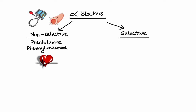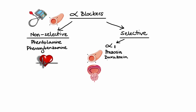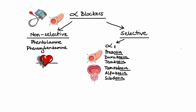Now let's move on to selective alpha blockers — specifically alpha-1 blockers. These agents selectively and reversibly block alpha-1 receptors located mainly in vascular smooth muscle, which reduces peripheral resistance and decreases blood pressure. They also block receptors in the smooth muscle of the bladder neck and prostate gland, causing relaxation there and relieving urinary difficulties associated with benign prostatic hypertrophy (BPH). Examples include prazosin, doxazosin, terazosin, tamsulosin, alfuzosin, and silodosin — note that the "-osin" ending is a good giveaway for identifying alpha-1 blockers.